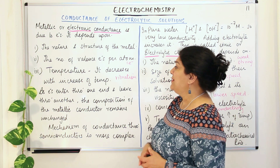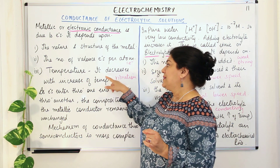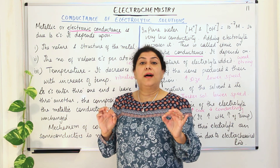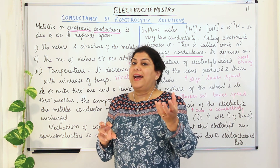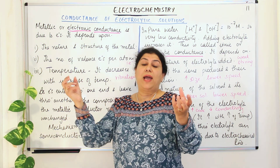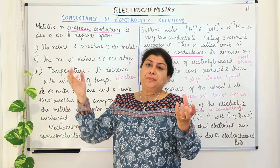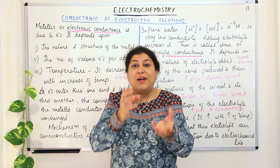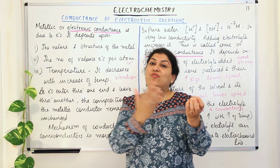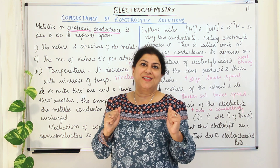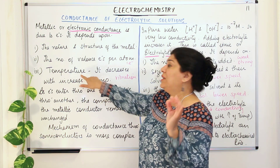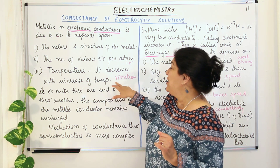The third factor on which electronic conductance depends is temperature. It has been found that as you increase the temperature, metallic conductance decreases. Metals are solids, and if you increase the temperature, the atoms — the kernels — start vibrating. When there is too much vibration in the solid, the movement of electrons becomes difficult and therefore conduction is decreased. So the conductance of metals decreases with increase of temperature due to vibration.